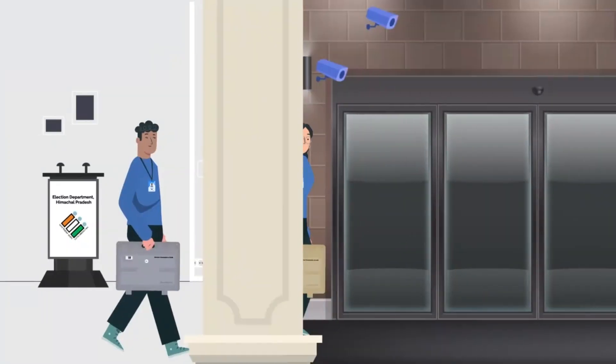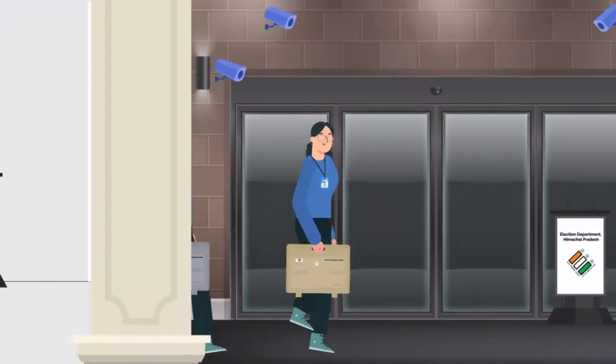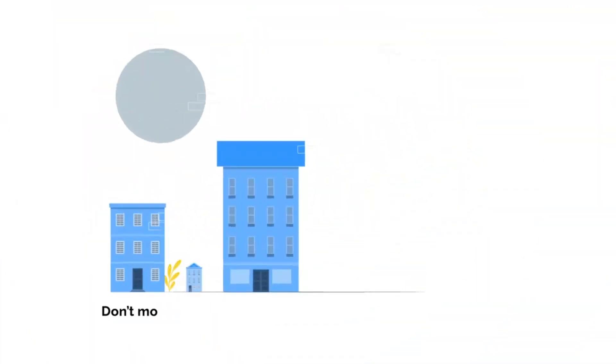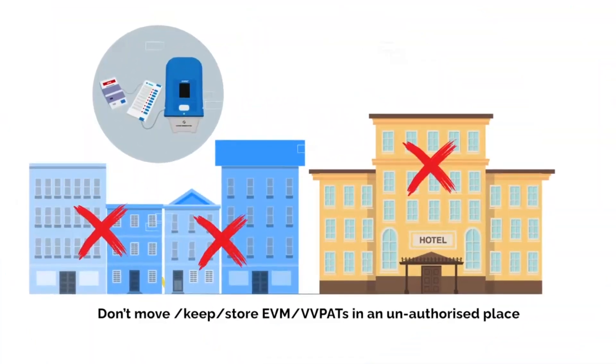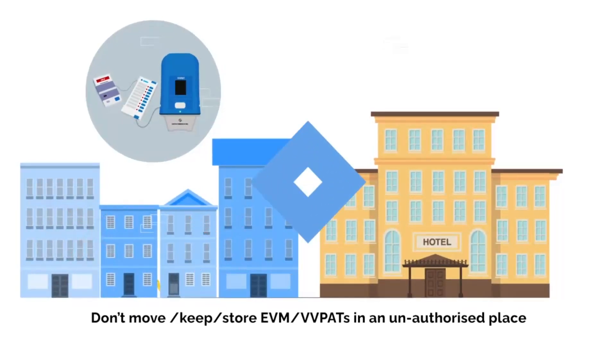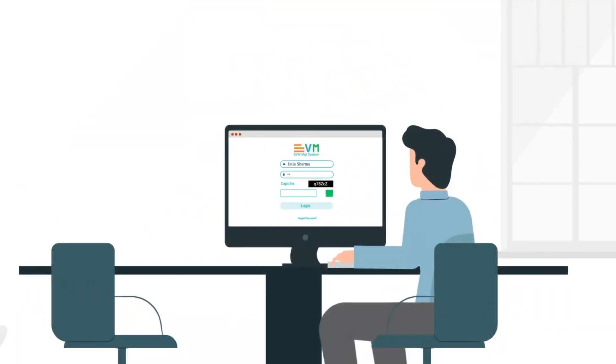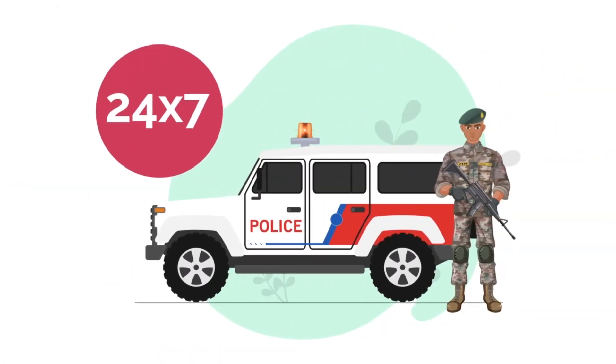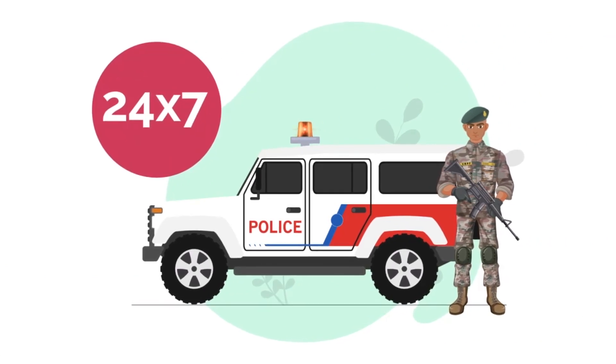List of don'ts in general: Don't allow unauthorized persons and staff to handle EVM and VVPAT. Don't move or keep or store EVM and VVPAT in an unauthorized place. Don't shift EVM and VVPAT without entry in EVM Management System. Don't leave units without 24-7 security.